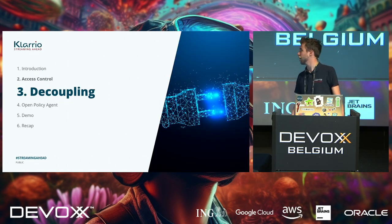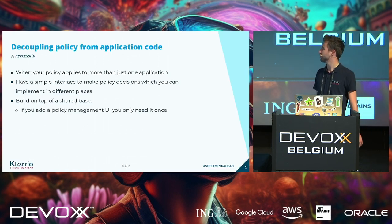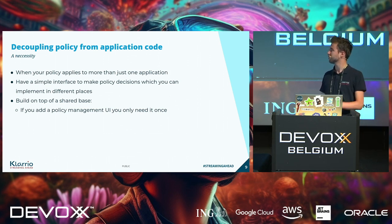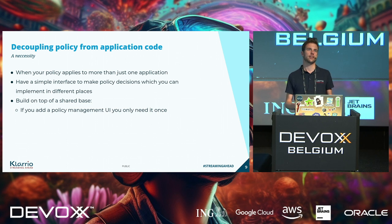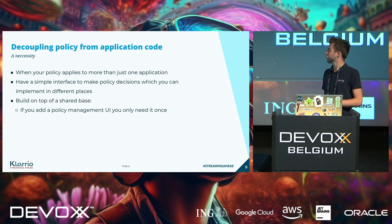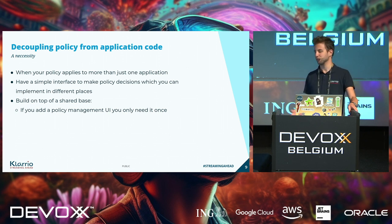Now that we've covered general access control models, let's talk about decoupling policy from application code. You might have scenarios where your policy applies to more than just one application — something we've actually run into in the real world. We had a platform with lots of applications, all lacking sufficiently granular access control for new requirements. This is a case where it really pays off to build one access control system and reuse it everywhere. If you need to add more features, you can build them once — like a UI on top of that, for example.